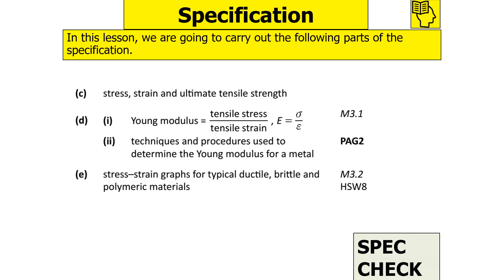In today's lesson, we're going to be looking at the following parts of the OCR A-level physics specification: stress, strain, and ultimate tensile strength; the Young Modulus; techniques and procedures used to determine the Young Modulus for a metal; and stress-strain graphs for typical ductile, brittle, and polymeric materials.